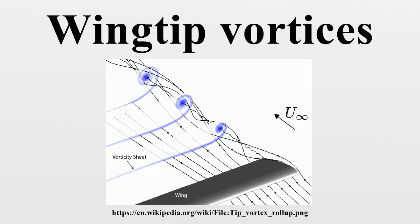Wing-tip vortices are associated with induced drag, an unavoidable consequence of three-dimensional lift generation. The rotary motion of the air within the shed wing-tip vortices reduces the effective angle of attack of the air on the wing. The lifting line theory describes the shedding of trailing vortices as span-wise changes in lift distribution. For a given wing span and surface, minimal induced drag is obtained with an elliptical lift distribution.